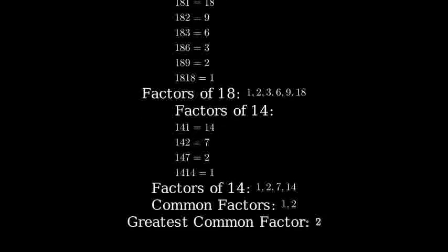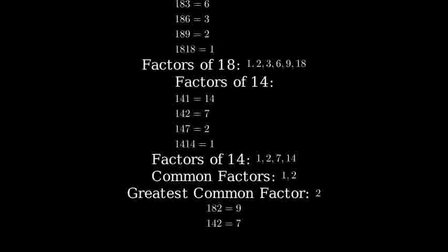Therefore, the greatest common factor of 18 and 14 is 2. To verify this is correct, let's check that 2 divides evenly into both 18 and 14. 18 divided by 2 is 9, and 14 divided by 2 is 7. Both divisions result in whole numbers with no remainder, confirming that 2 is indeed a common factor.